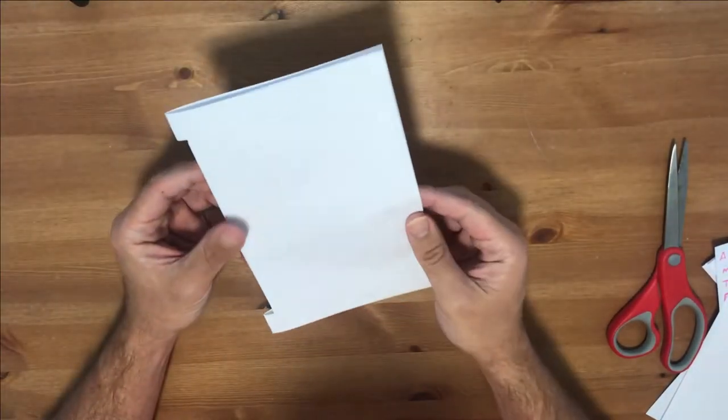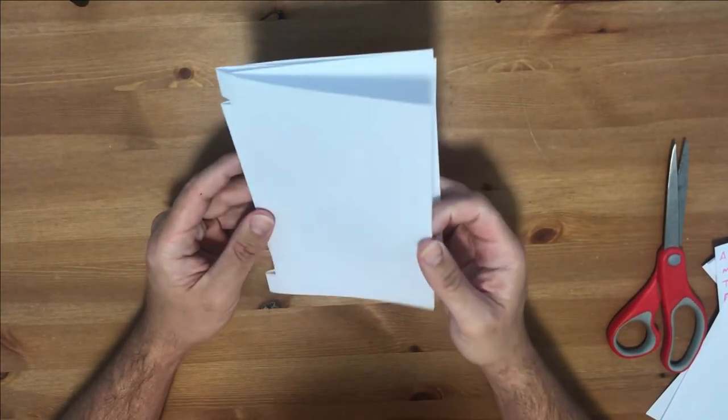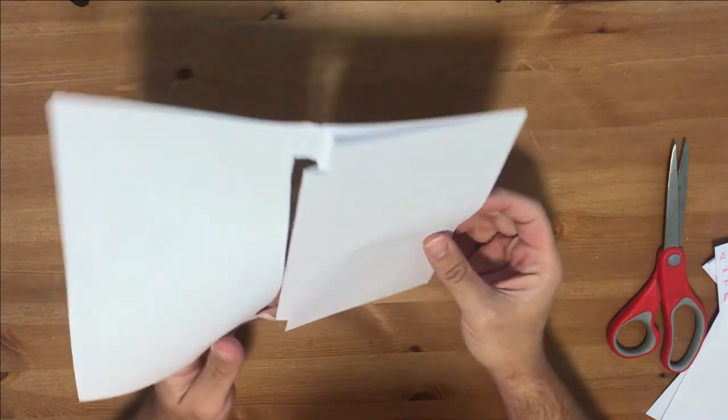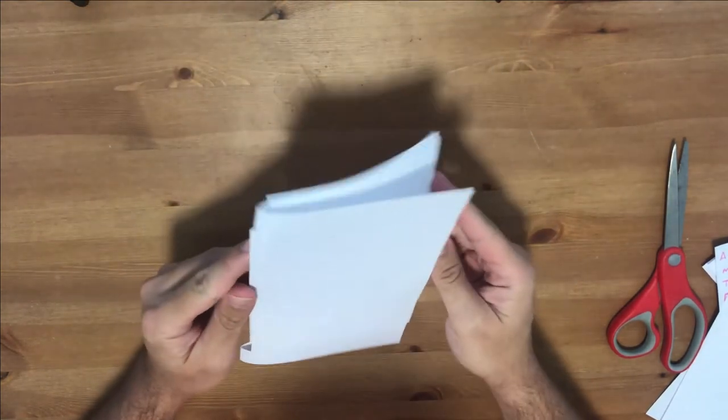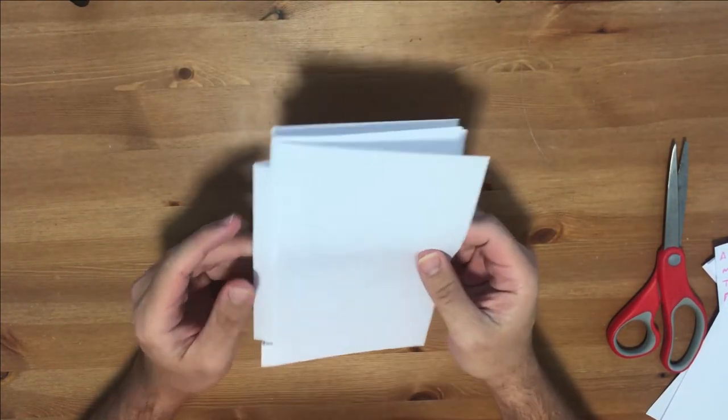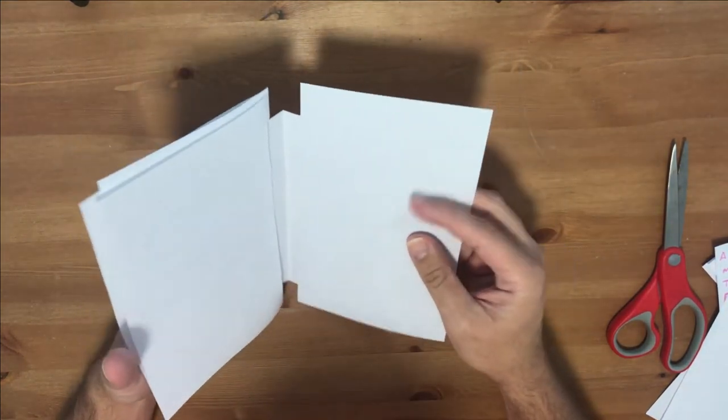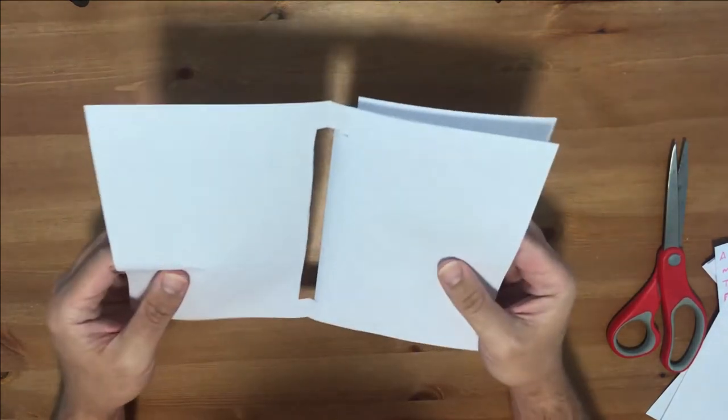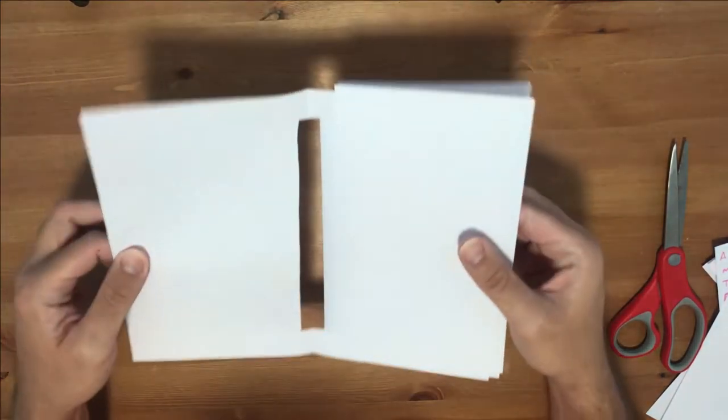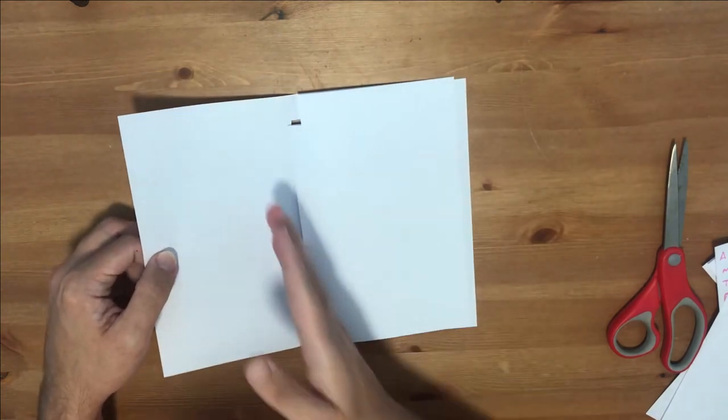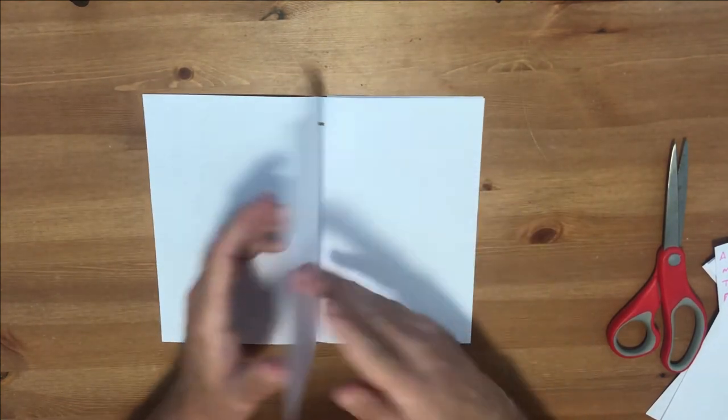So another simple way to bind a zine is through something called a taco bind. Some people call this a taco bind, some people call this a taco burrito bind. It just depends. The way this works is you're going to make this one page here sort of hold the other pages in place.